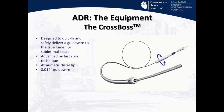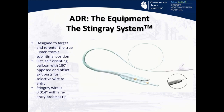The equipment: the CrossBoss is the initial catheter we use in these cases. It's designed to quickly and safely deliver a guide wire to the true lumen or to the sub-intimal space beyond the CTO. It's advanced by a fast spin technique — you rotate it back and forth as fast as you possibly can with a minimum of forward pressure. It has an atraumatic distal tip and is moved over an 0.14 guide wire.